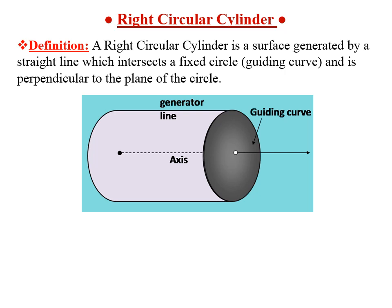Now, as compared to the previous chapter where we studied the right circular cone, what is the difference between a right circular cone and a cylinder? In a right circular cone, all generator lines pass through one fixed point. But in a right circular cylinder, all generator lines are parallel to each other as well as parallel to the axis of the cylinder.